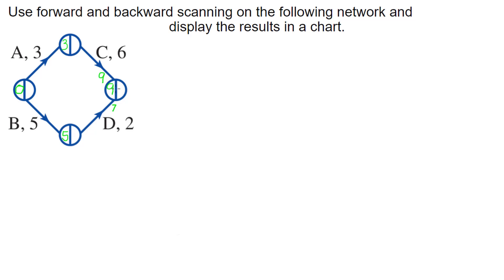That's forward scanning done. These are the earliest start times: the earliest I can start A and B is zero; the earliest I can start C is at minute three; the earliest I can start D is at minute five; and the entire project can be completed after minute nine. Now we can do our backward scanning.